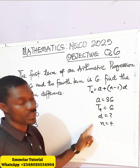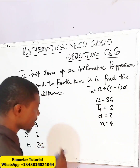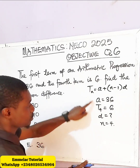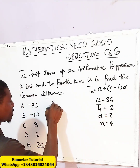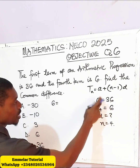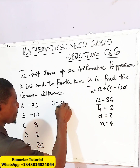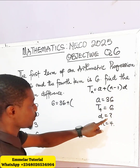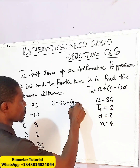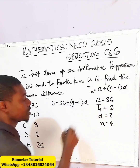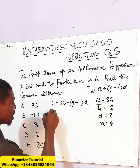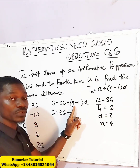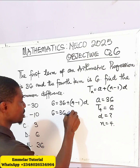Let us plug in all these parameters into the equation. We have T4 equals 6, so: 6 equals A which is 36, plus open bracket, N which is 4, minus 1, then D. So we have 6 equals 36 plus 3D.